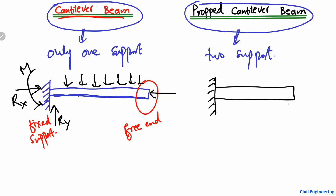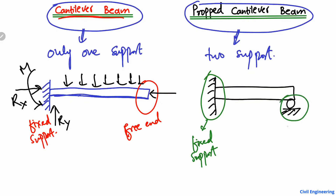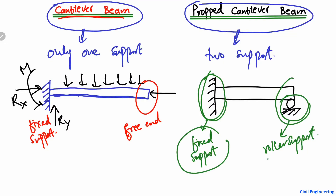In the propped cantilever beam, if I draw it like this, it is also provided with a roller support. So this type of beam has two supports — one is a fixed support, like in the cantilever, and the other is a roller support. When the beam has one fixed support on one end and a roller support on the other end (not free), this type of beam is called the propped cantilever beam.